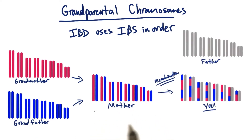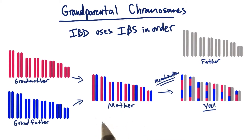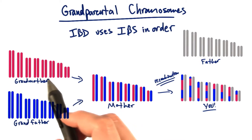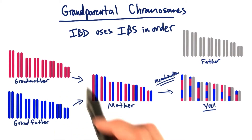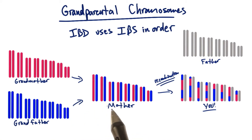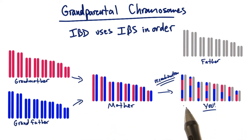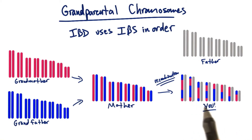When your mother's germ cells went through meiosis to make eggs, recombination allowed her chromosomes to mix and match the grandparental chromosomes — her parental chromosomes — so that when you inherited a set of chromosomes from your mother, you got this interesting mix of your grandparents.